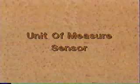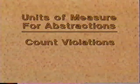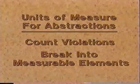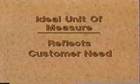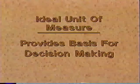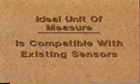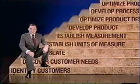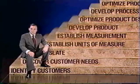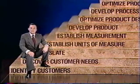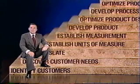Precision in matters of quality requires that you say it in numbers. If you can measure it, you can more effectively manage it. To say it in numbers requires, for each customer need, a unit of measure and a sensor. All units of measure require precise definition. Units of measure for abstractions may be established by counting the violations or by breaking up the abstraction into measurable elements. An ideal unit of measure reflects the customer's need, provides an agreed basis for decision-making, is understandable, applies broadly, may be interpreted uniformly, and is compatible with existing sensors. In the next session, you will continue the examination of measurement. Once you have established units of measure, you need a sensor with which to establish measurement. Sensors will be the subject of the next session.